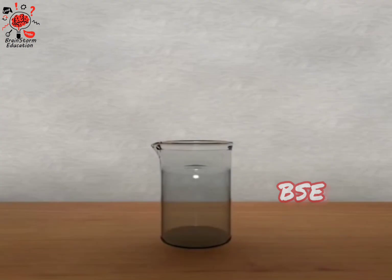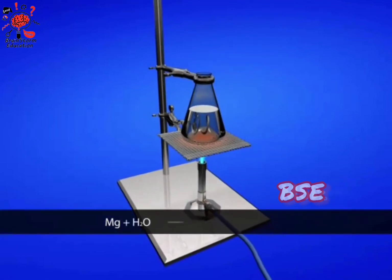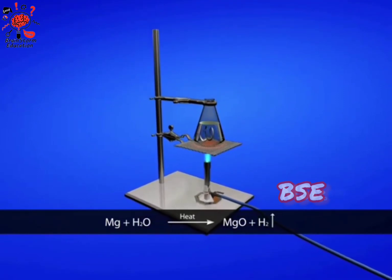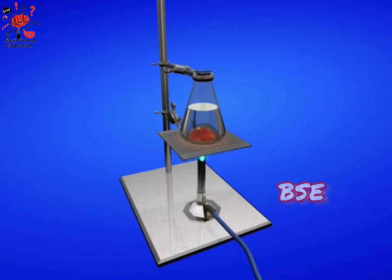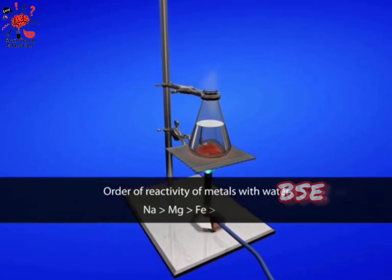Different metals have different reactivities with various non-metals, such as oxygen and hydrogen. For example, sodium reacts violently with water, even at room temperature. Hydrogen in water is replaced by magnesium only on heating. Copper does not react with water. Thus, we can predict the non-metal displacement by the order of reactivity.